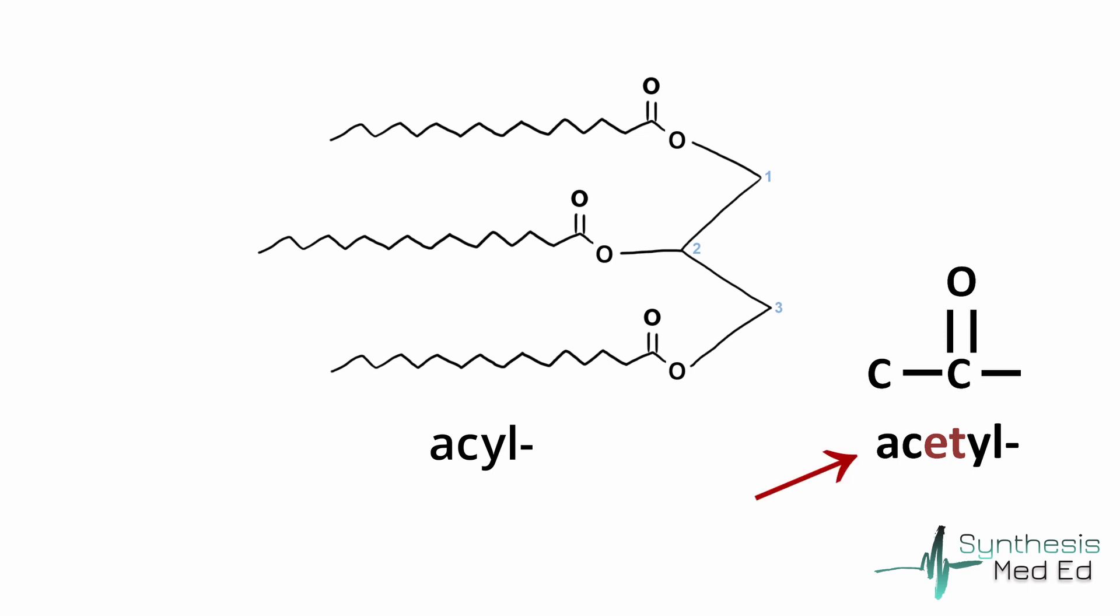An acetyl group is a two-carbon molecule which we use as fuel in the TCA cycle and which these fatty acids are chock-full of. An acyl group is a fatty acid that is being linked as a substituent to another molecule. So in this molecule, we have three acyl groups being linked to a glycerol molecule, and therefore we call this molecule a triacylglyceride, sometimes also referred to simply as a triglyceride.